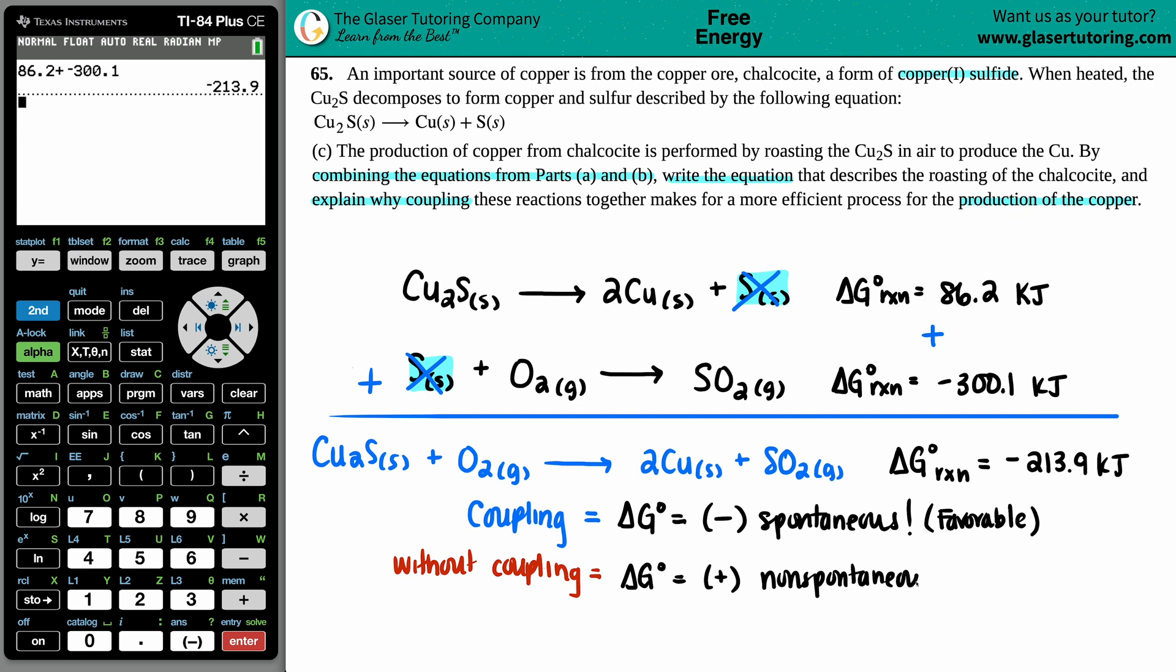That means if I wanted to produce this copper by just running the first reaction, I would need to put some additional amount of energy source, probably raising the temperature to make it get done. This is unfavorable.